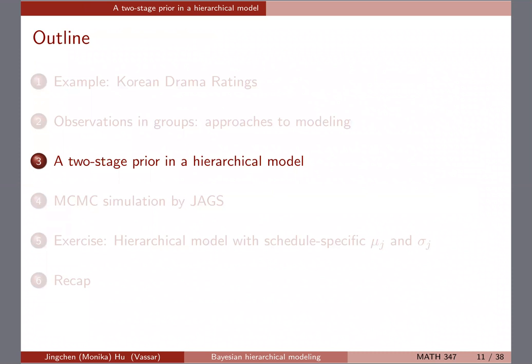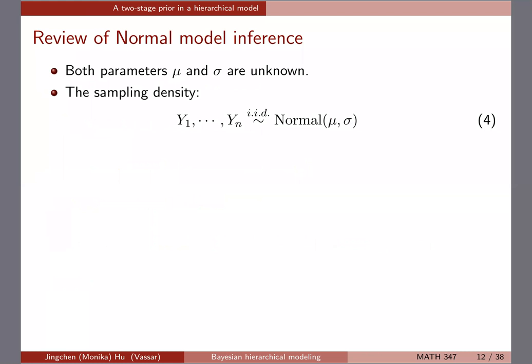In a hierarchical model, we know we're going to give a shared prior distribution for some subsets of parameters. In this case we're doing a two-stage prior — I'm going to explain what I mean by that. If you have more levels of data you can have multiple stages, but for us right now it's going to be a two-stage.